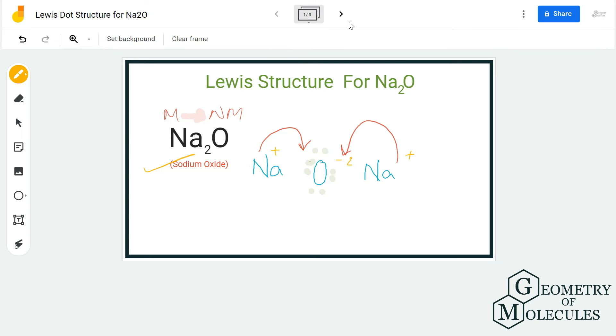As they have now gained charges, we are going to put brackets around it. So we are going to put brackets, mention the charge, and this is the Lewis structure for Na2O.